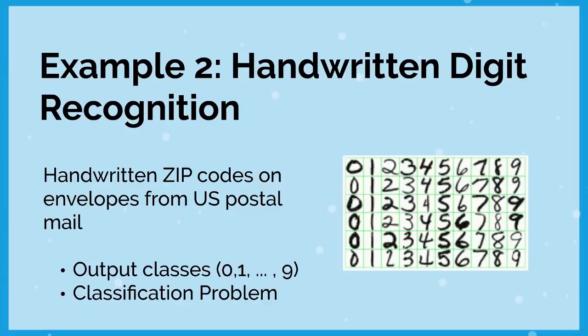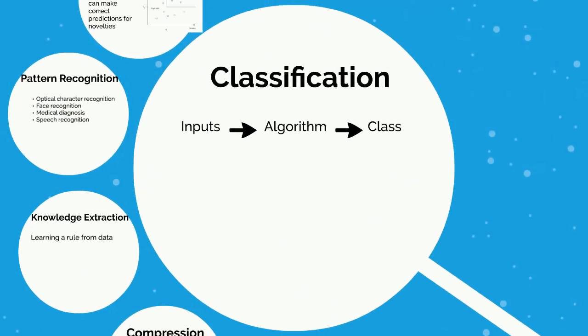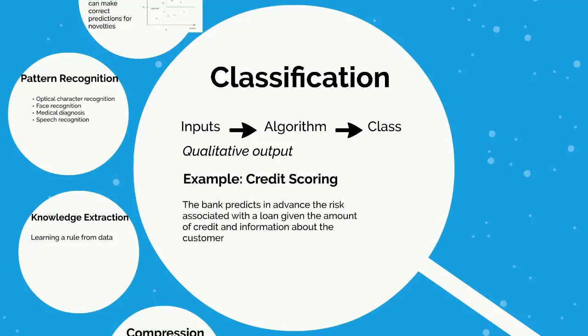Let's talk more about what classification algorithms entail. In classification, your output is going to be a class — a qualitative output. This is the defining feature of a classification algorithm. An example is credit scoring: not necessarily generating a credit score, but using it to predict in advance whether a customer is going to be a high-risk or low-risk loaner.